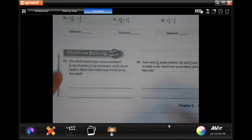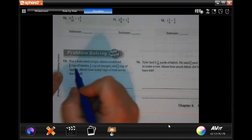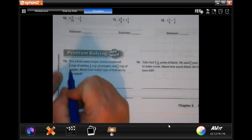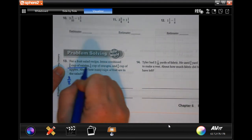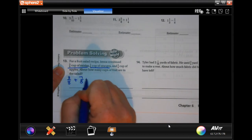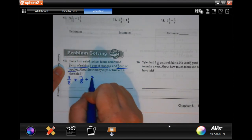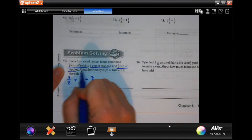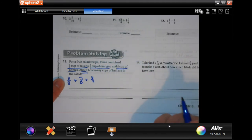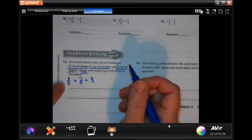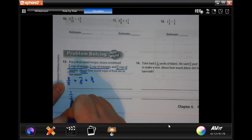We're going to go down and do our word problems. For a fruit salad recipe, Jenna combined 3/8 cup of raisins, 7/8 cup of oranges, and 3/4 cup of apples. About how many cups of fruit are in the salad? So it's wanting us to estimate. Well, 3/8, that's about half.